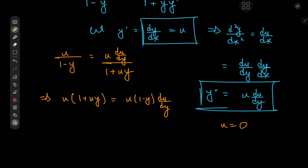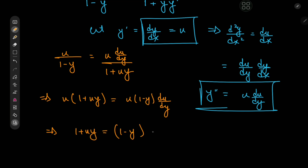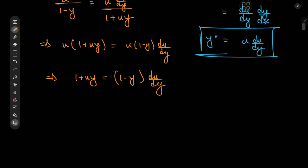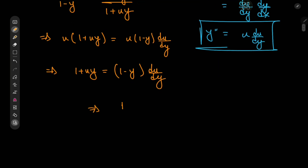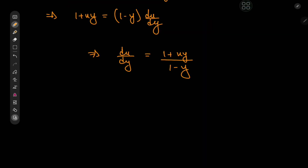But u equal to 0 implies that y is equal to some constant c, which is not all that exciting, so we're not missing out on much. Expanding by 1 over u we have 1 plus u times y equal to 1 minus y times du by dy, which implies that du by dy equals 1 plus u times y divided by 1 minus y. All we need now is some algebraic manipulation.